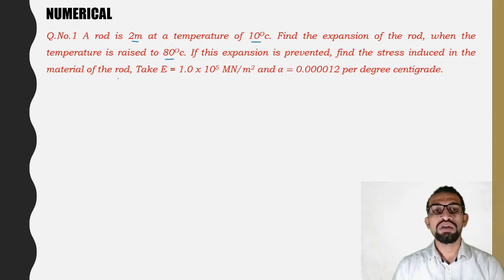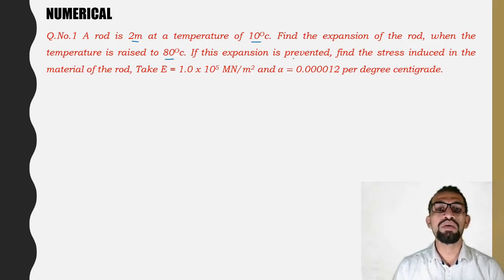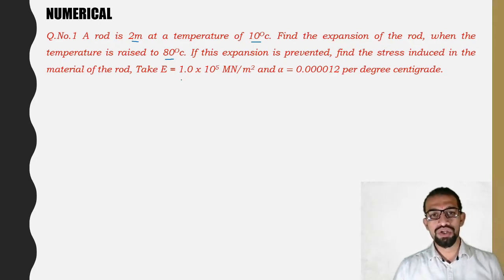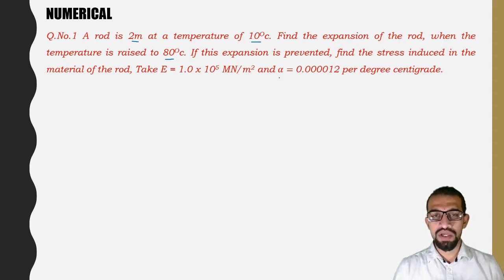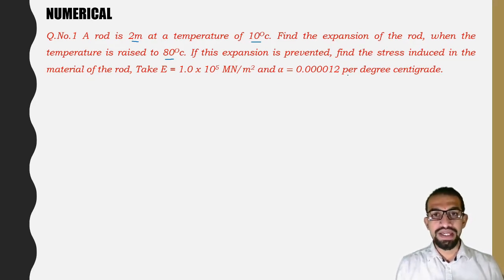E (Young's modulus) = 1.0 × 10⁵ MN/m² and alpha (coefficient of thermal expansion) = 0.000012 per degree centigrade. It is per degree centigrade — we need to remember this point.